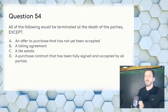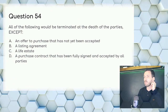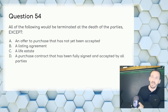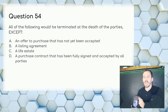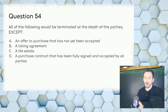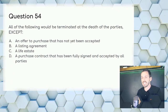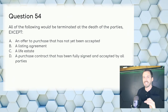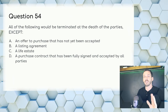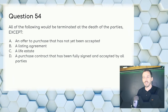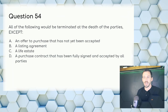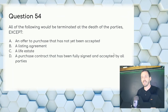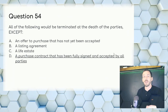Question 54: All of the following would be terminated at the death of the property owner except — an unaccepted offer dies, a listing agreement dies, and a life estate terminates by definition. A purchase contract that has been fully signed and accepted by all parties will not be terminated by death. Answer: D.